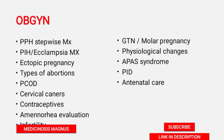Amenorrhea evaluation — both primary and secondary — and infertility: newer modalities and treatment options, mainly sperm analysis findings, WHO findings and abnormal findings. Molar pregnancy, gestational trophoblastic neoplasms, partial mole versus complete mole differences, physiological changes in pregnancy, antiphospholipid antibody syndrome, pelvic inflammatory disease, and basic antenatal checkup.